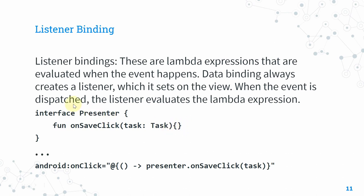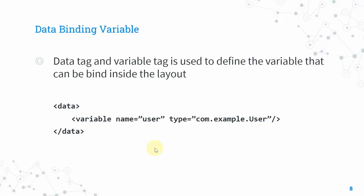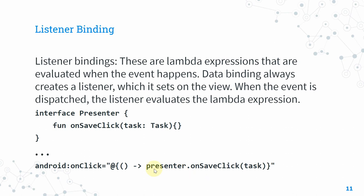An interface only contains the function signature, not the body. In the layout, using expression language, you write a lambda: the left part is the function parameter (which can be empty), and the right part calls the destination function — for example, presenter.onSaveClick(task). The 'task' here is another variable you've already defined in the layout, similar to how you defined 'user'.